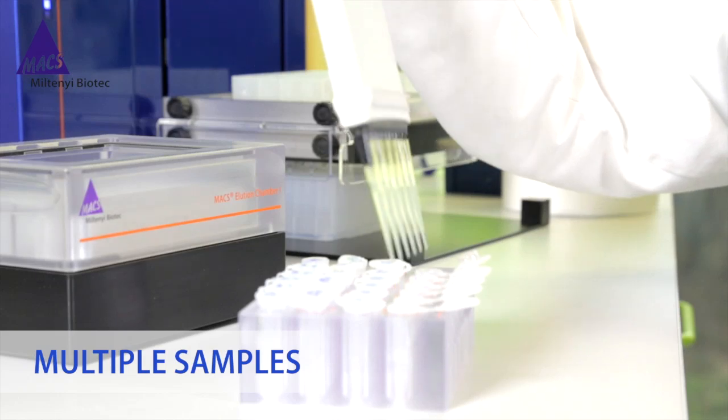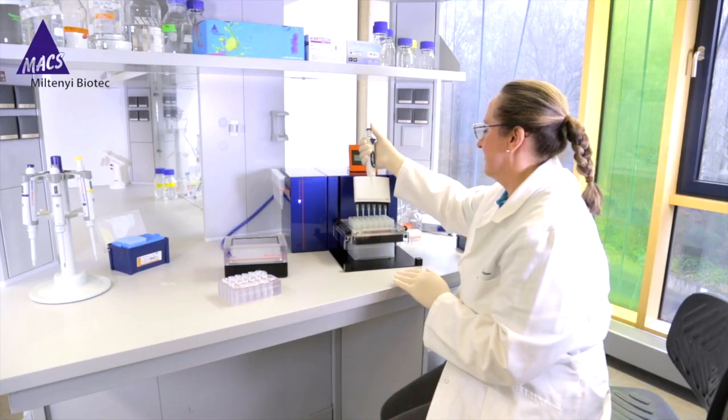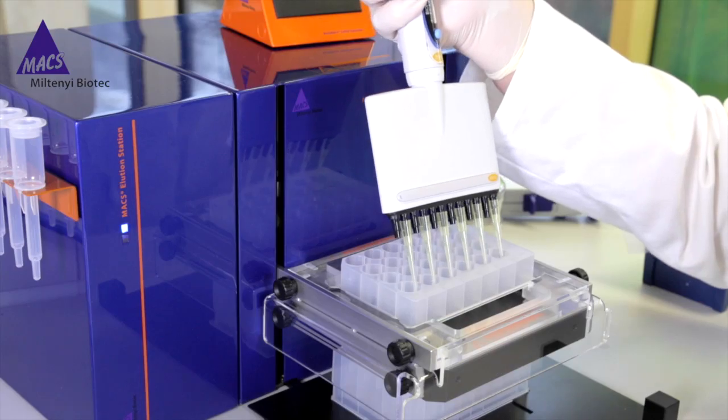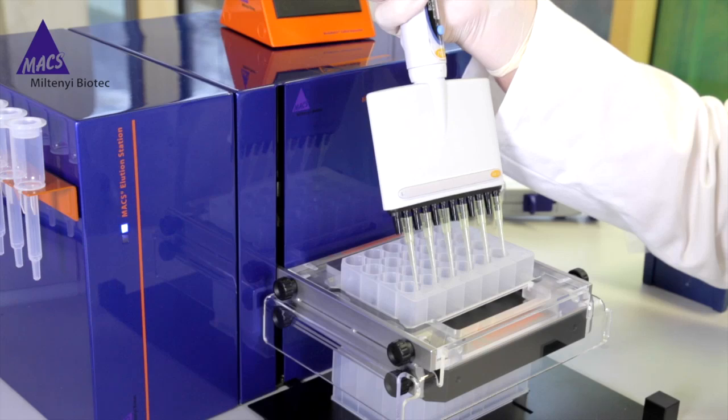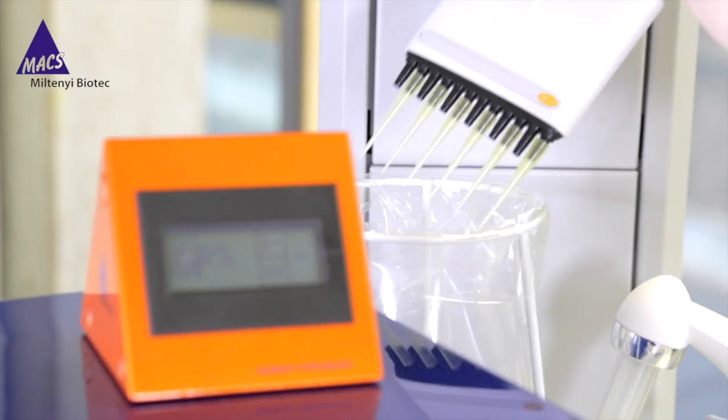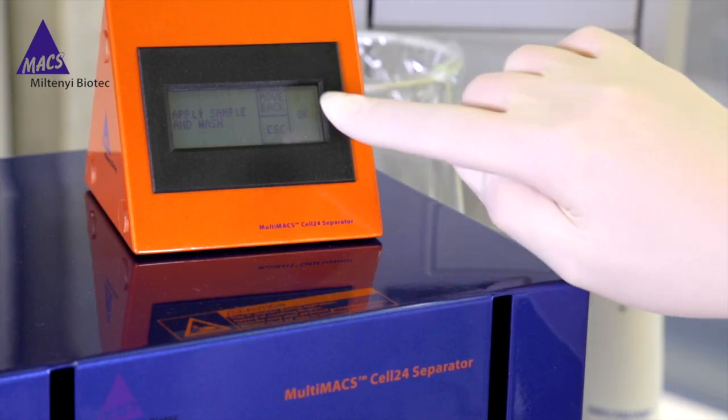Whereas the Multi-24 column block allows you to isolate up to 24 samples or 90 milliliters of whole blood in a single run, saving you considerable time, money, and effort.